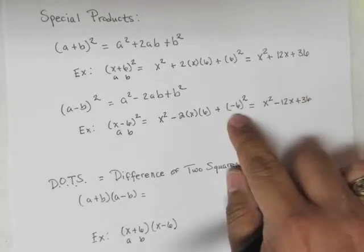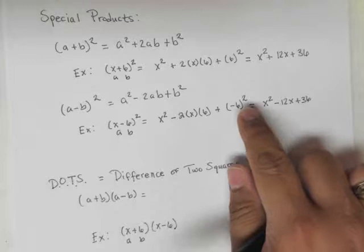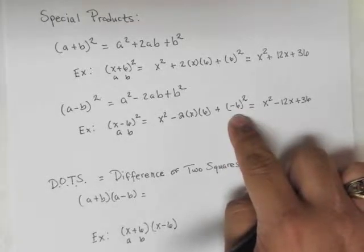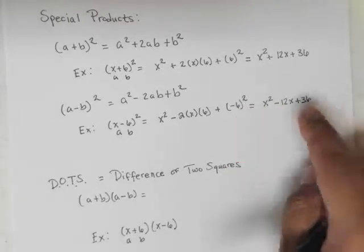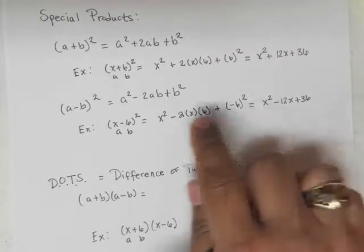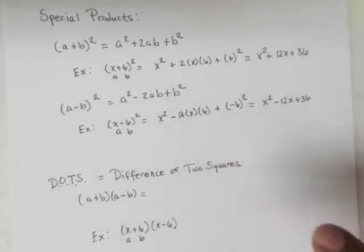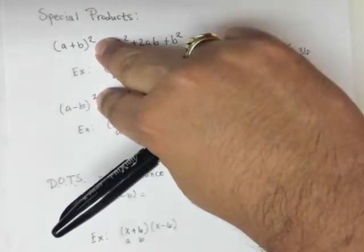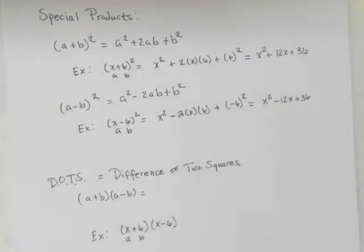When you square negative 6, remember, a negative times a negative is a positive. So x²-12x+36 is the binomial expansion of this. These are binomial squares, and they are considered special products.